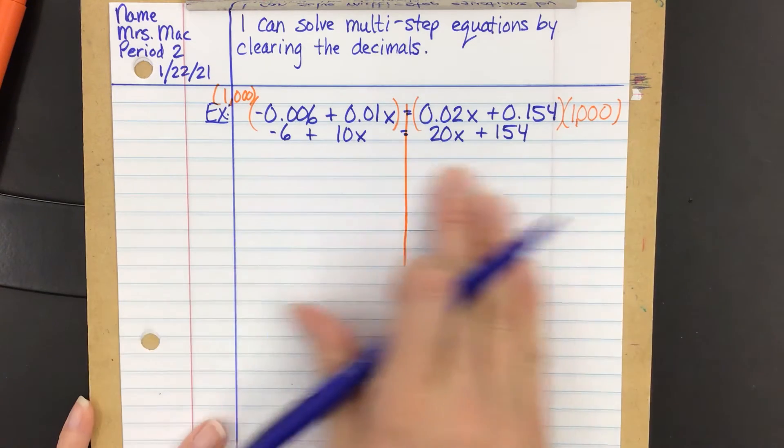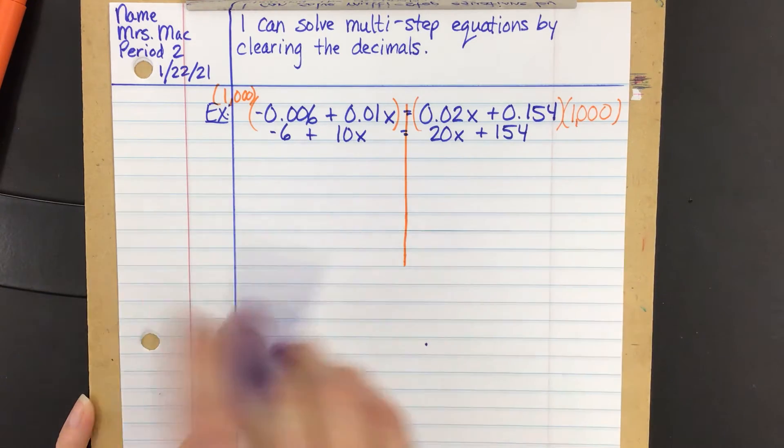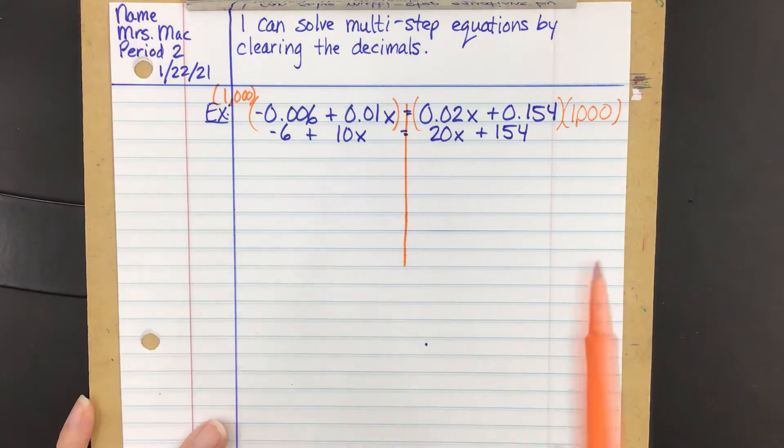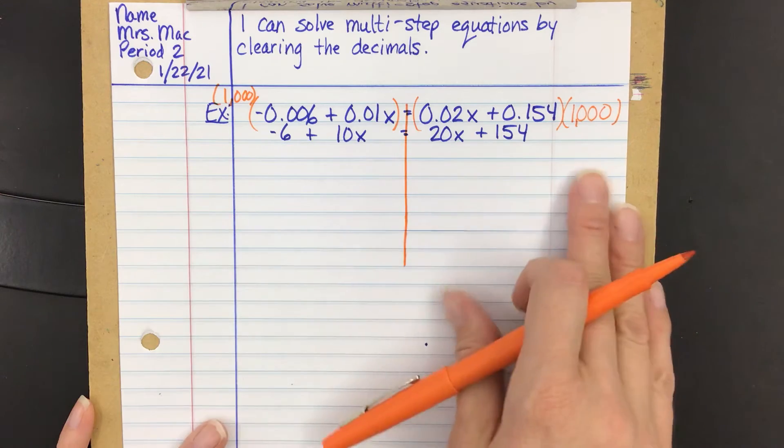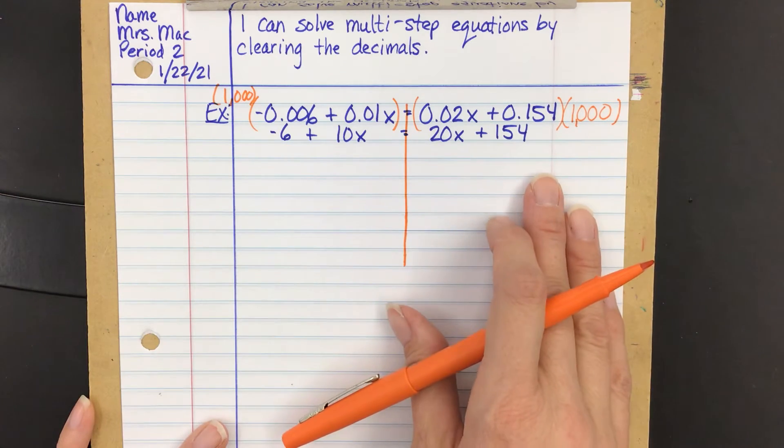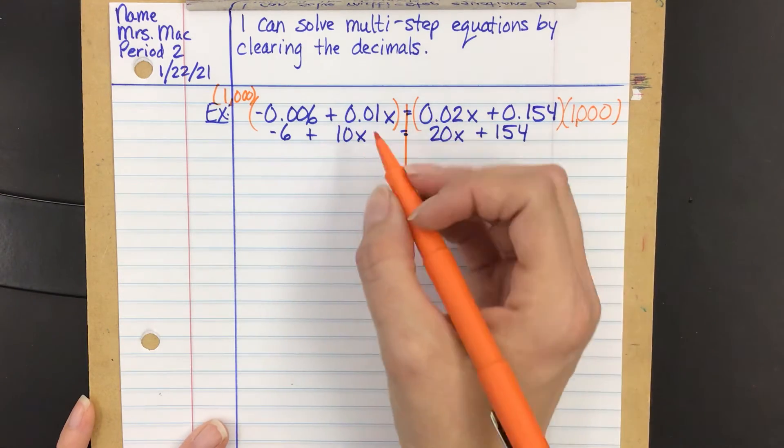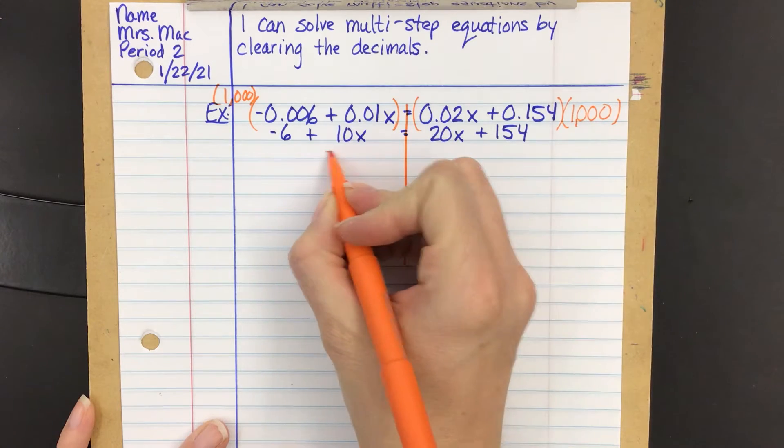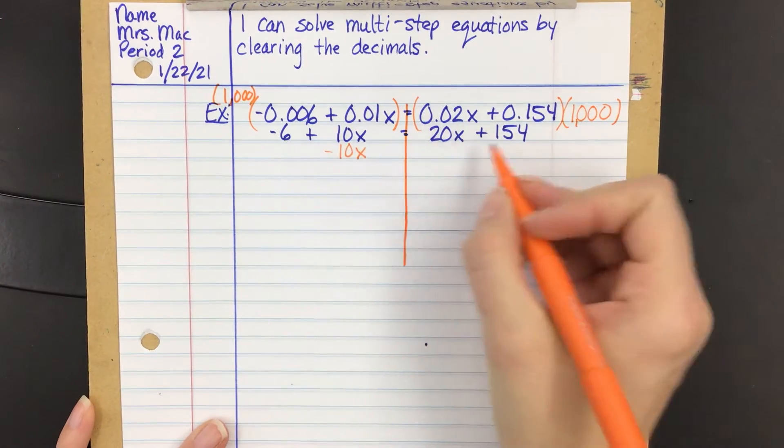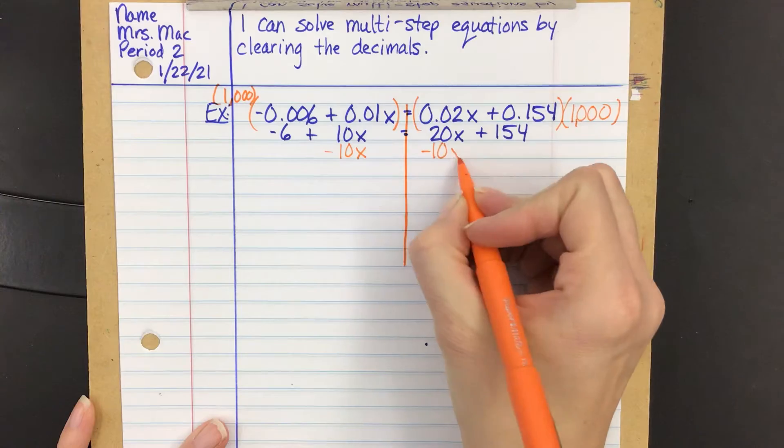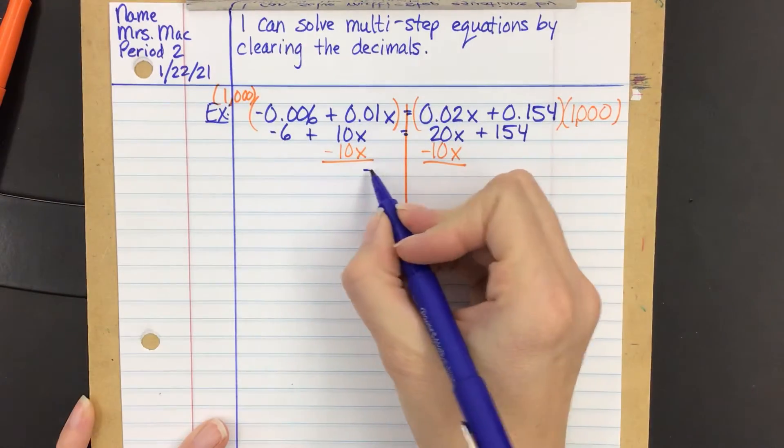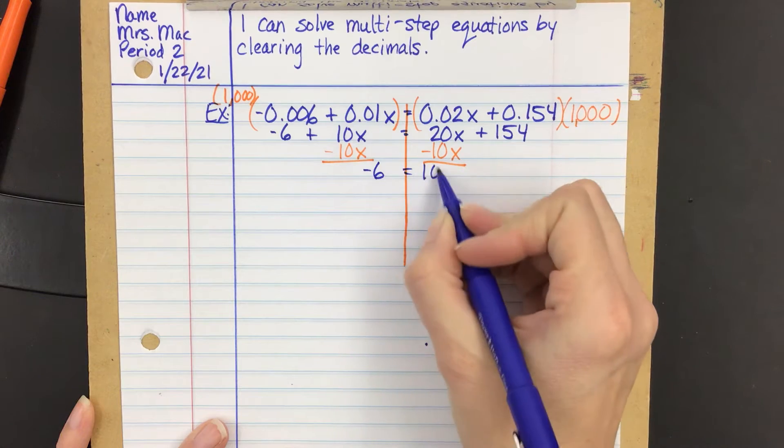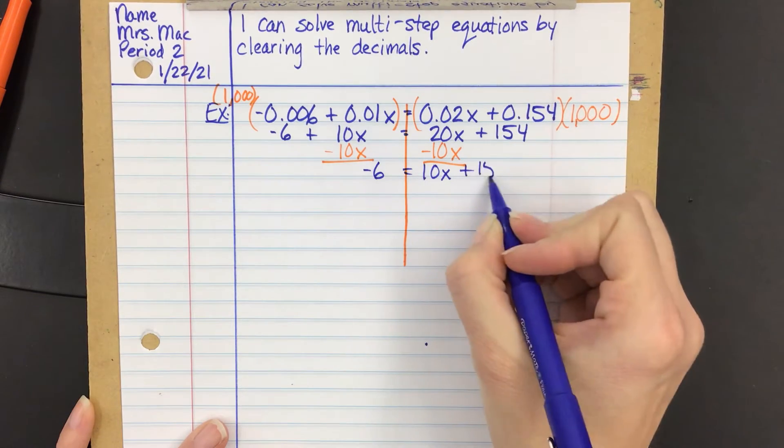Now, this is a lot prettier, right? A lot more manageable. So I'm going to go through the process now of finishing solving this. There's no grouping. There's no like terms that can be combined on either side. So I'm going to then jump in by moving all of my variables to one side of the equal sign. So we're going to have negative 6 is equal to 10x plus 154.